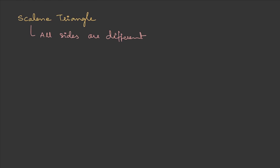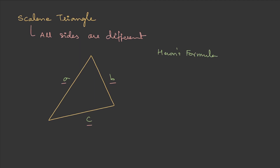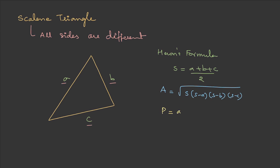The third category is the scalene triangle, where all sides are different. Here is a sample figure where the sides are a, b, and c. To calculate the area, we use Heron's formula. We first find the semi-perimeter s = (a + b + c)/2. Then the area = √(s(s−a)(s−b)(s−c)). The perimeter is simply a + b + c.